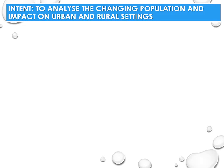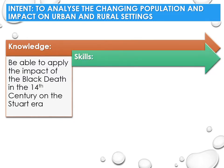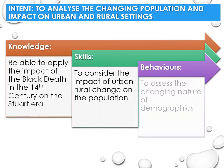The intention for this lecture is for you to be able to analyse how the change in population impacted on the urban and rural settings. To clarify, urban settings are cities and towns, and rural settings means the countryside. Knowledge-wise, you will be able to apply the impact of the Black Death in the 14th century on the Stuart era. Skills-wise, consider the impact of urban and rural change on the population. Behaviourally, you will assess the changing nature of demographics.